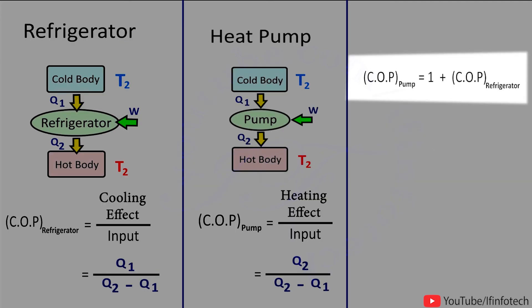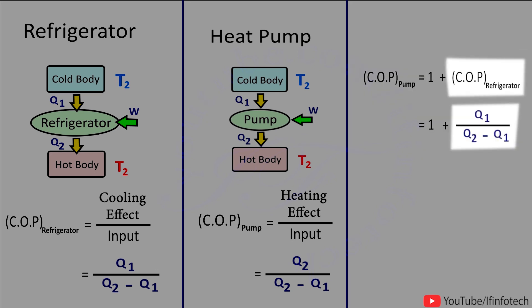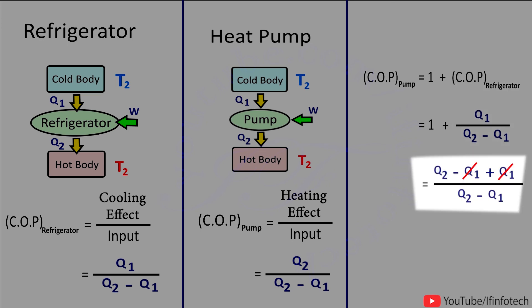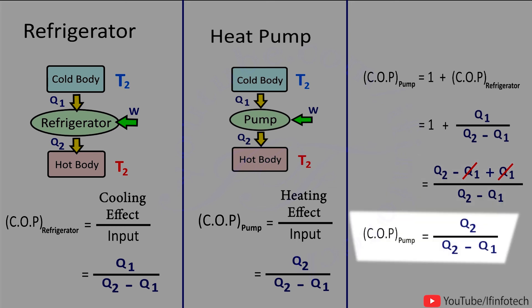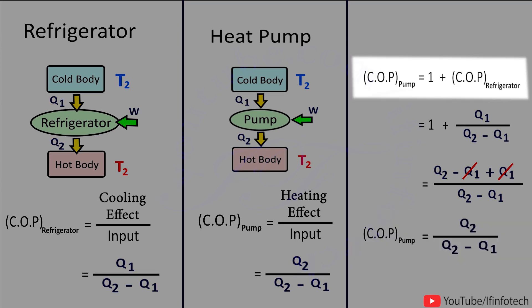Now we derive the equation: COP for heat pump equals 1 plus COP for refrigerator. Starting from COP of refrigerator = Q1 / (Q2 - Q1), adding 1 gives Q2 / (Q2 - Q1), which is exactly the COP of the heat pump. In this way, we prove that COP of heat pump is always greater than 1.